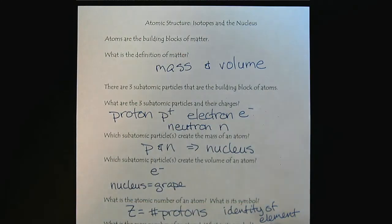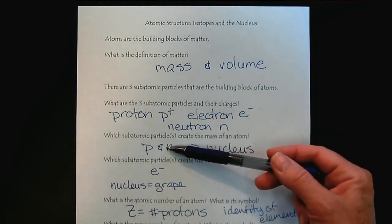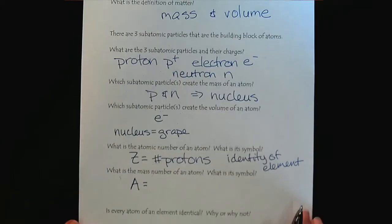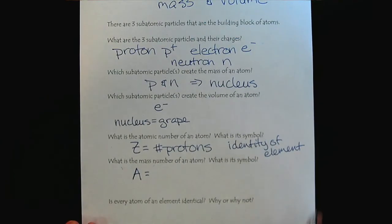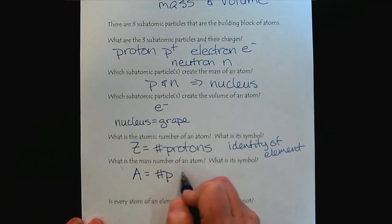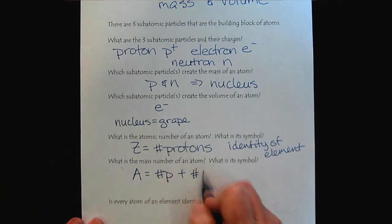So now the mass number is related to the idea that it's both the protons and the neutrons that are creating the mass. So when you hear the words mass number, you'd be thinking of the symbol A. There's our mass number. And so that's going to be the number of protons plus the number of neutrons.